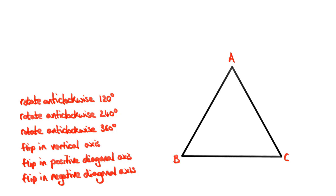So now we have a list of the six different transformations we've applied to this triangle — this is a list of all the symmetries of the triangle. Now is when the group part of this lesson comes in. Let's give labels to these symmetries. I'm going to label them with letters from A to F in a slightly unusual order, but the order isn't really important. All that matters is that I've given each transformation a symbol we can refer to easily, and we're going to create a group out of these transformations. The elements of the set that form our group are the transformations themselves — each element is a transformation, not a number or a letter.